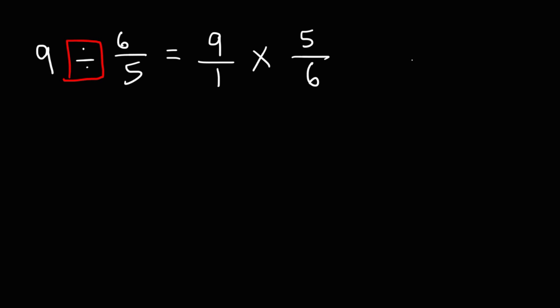Now the next thing we need to do is multiply across. So 9 times 5 is 45. And then 1 times 6 is 6. So we have 45 over 6.